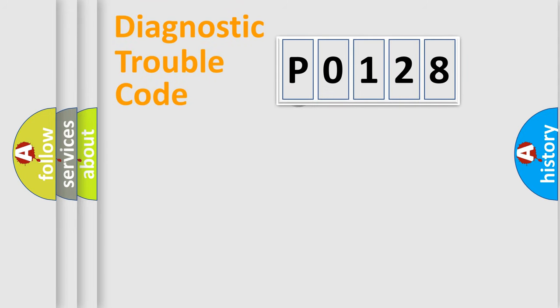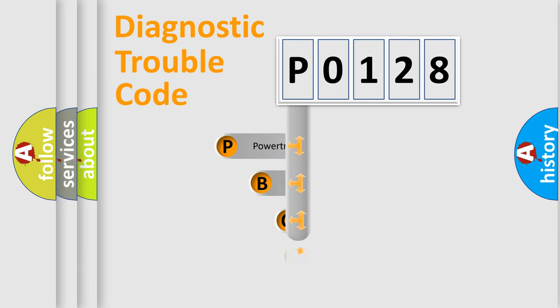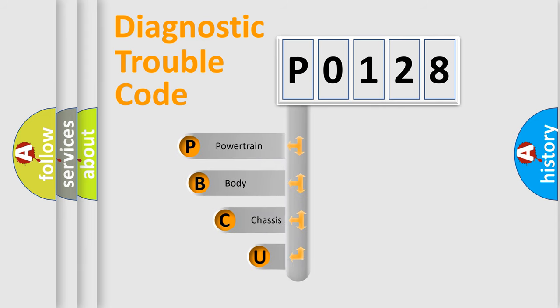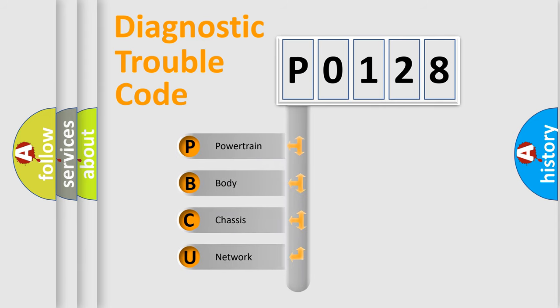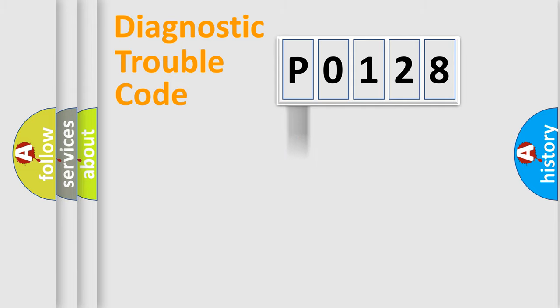Let's look at the history of diagnostic fault code composition according to the OBD2 protocol, which is unified for all automakers since 2000. We divide the electric system of the automobile into four basic units: Powertrain, Body, Chassis, and Network. This distribution is defined in the first character of the code.